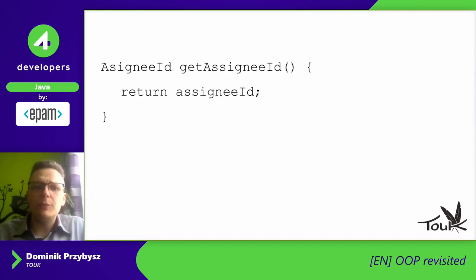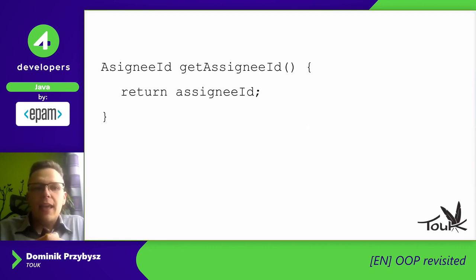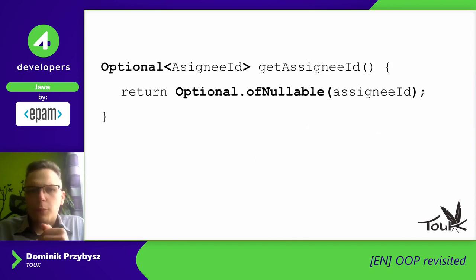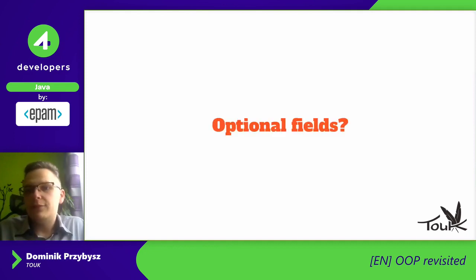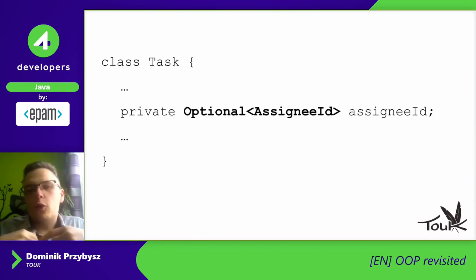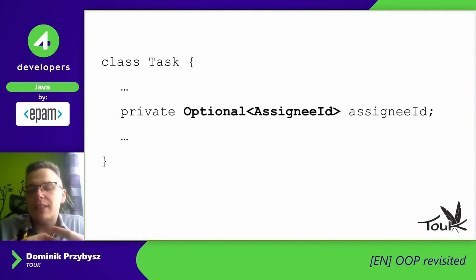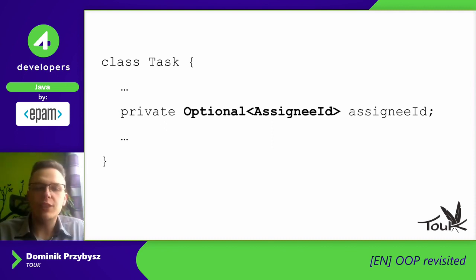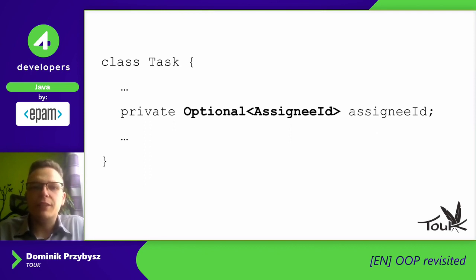Another problem with getters is when trying to return something that can be null. For example, getting an assignee ID — it would be much better to return an Optional value. You can wrap the value in the getter, or you can even keep an Optional field inside your object. When your object is well encapsulated, how you design your internal state is an internal matter, so if Optional is helpful for the design of the whole object, why not use it.